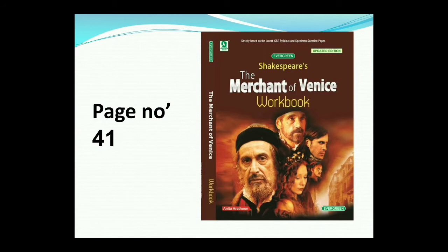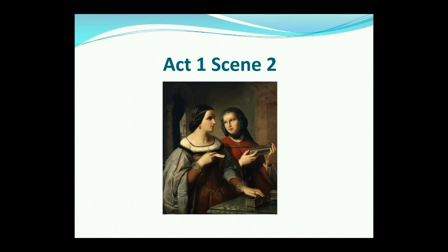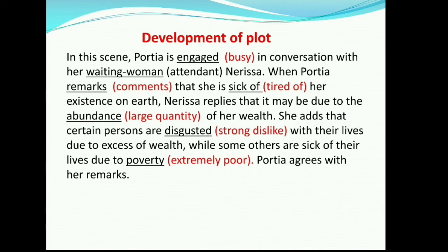Now students, open your Merchant of Venice workbooks at page 41. We will read the development of plot of Act 1 Scene 2. Before it, I will give you a brief summary of this scene as well. The scene moves from Venice to Belmont. We are introduced to Portia, about whom our curiosity has been roused. In this scene, Portia discusses with her maid Nerissa the scheme of her father's will by which her suitors must choose one of the three caskets in order to win her. Some of the suitors have already come in the hope of marrying her, but Portia makes fun of them and shows her dislike. Nerissa reminds her of Bassanio whom she had found quite attractive.